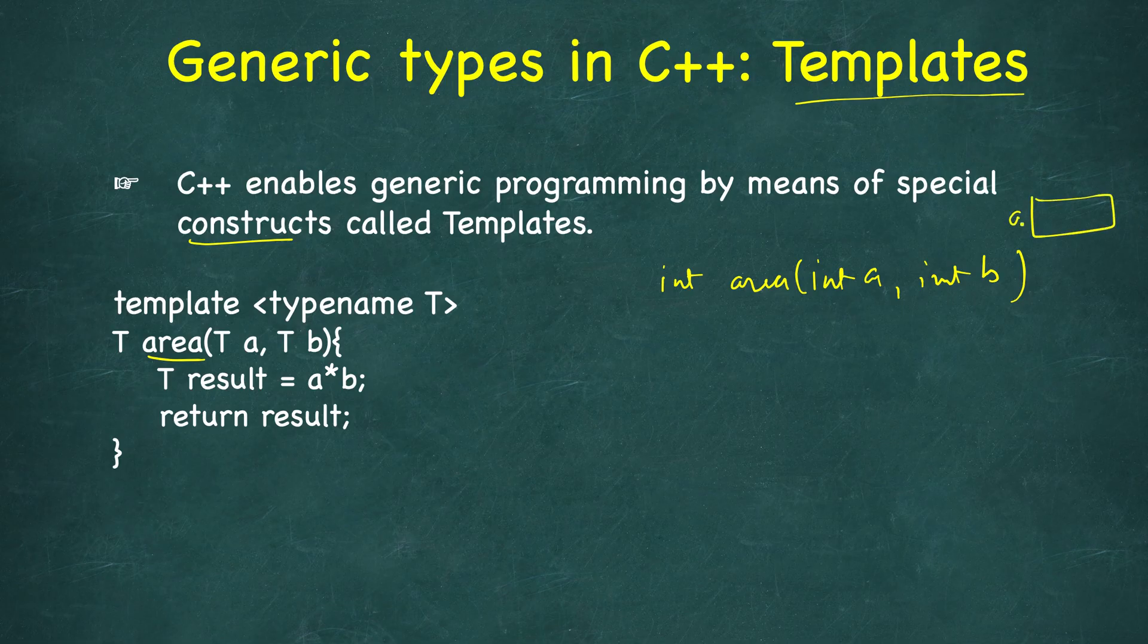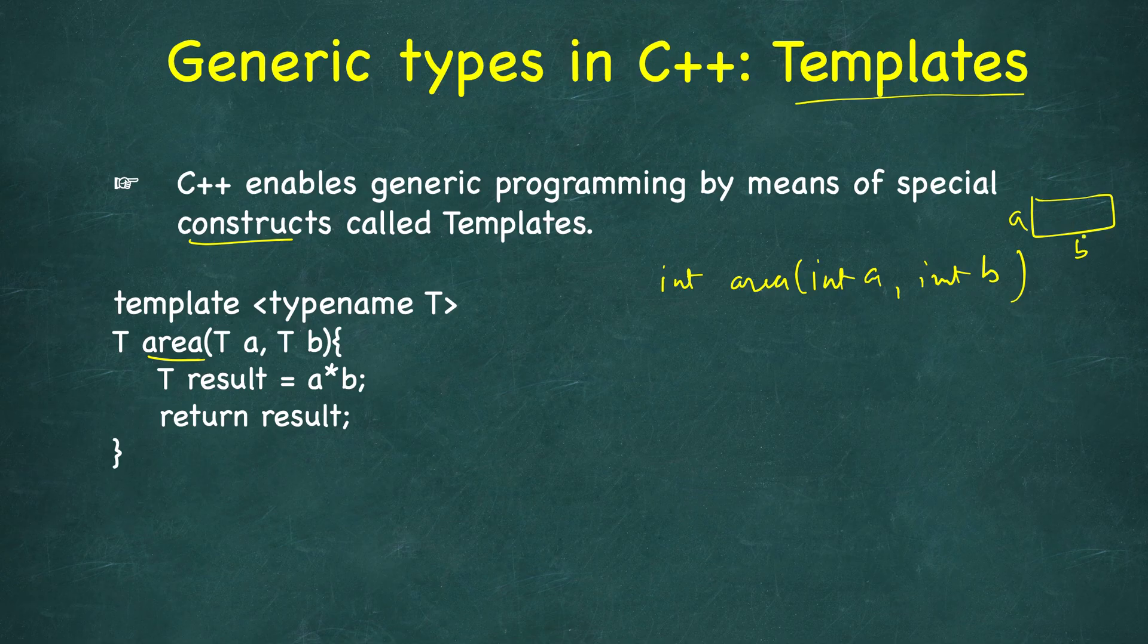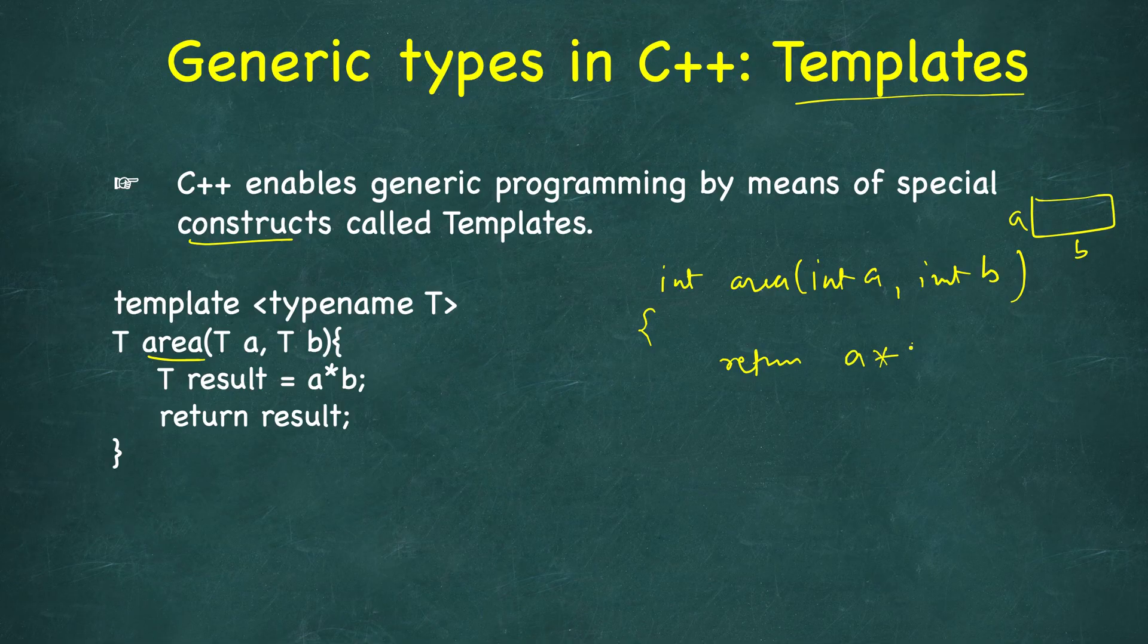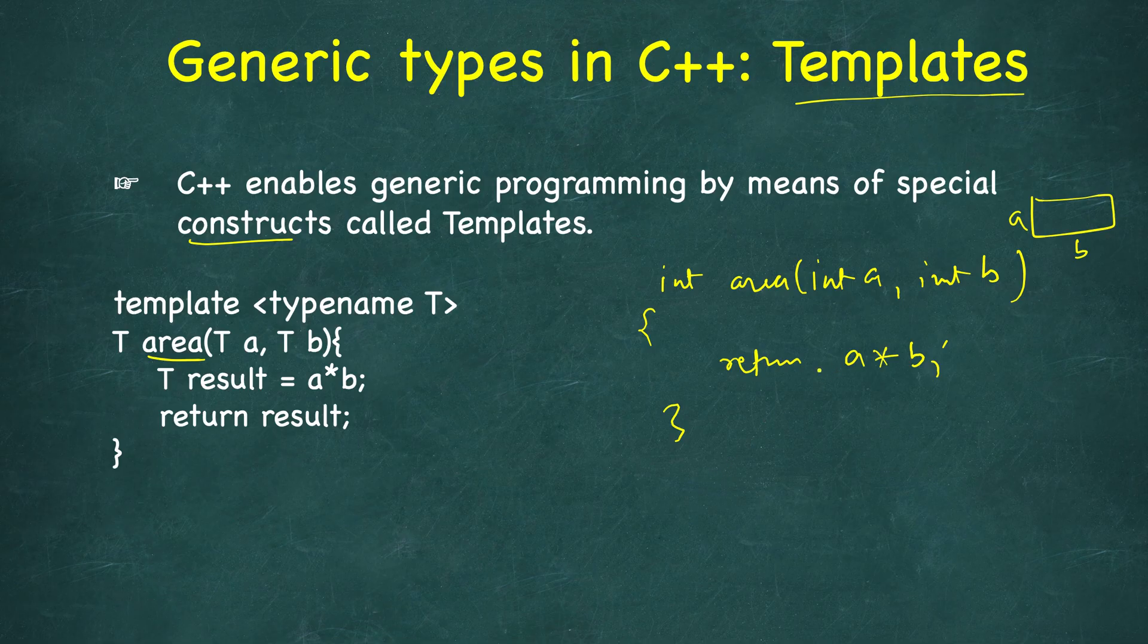But let's say we want to implement area for double also and float also. This will not work, or even if you use this for 5.5 and 10, this will be converted to int so it will return 50 but we needed 55 since we need it for double.